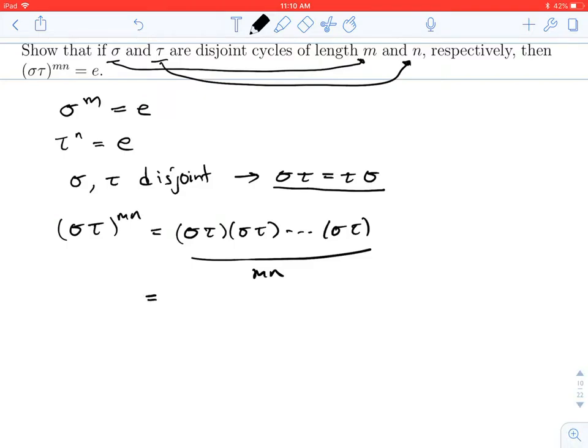that means I can rewrite all of these sigmas and taus in any order I like. And I'm going to choose to write all the sigmas together, there are mn of them, and all the taus together, and there are mn of those.